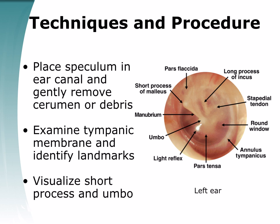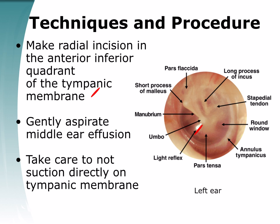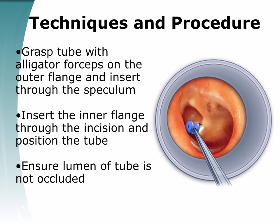The short process and umbo of the tympanic membrane are visualized. A radial incision is made in the anterior-inferior quadrant of the tympanic membrane. Middle ear effusion is gently aspirated; care is taken to not suction directly on the tympanic membrane. Grasp the tube with alligator forceps on the outer flange and insert down the speculum. The inner flange is placed through the Maringotomy incision and the tube is left in position. Repeat the above steps using various size and shape tubes, and ensure the lumen of the tube is not occluded.